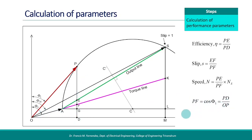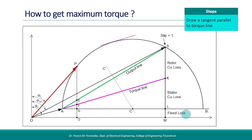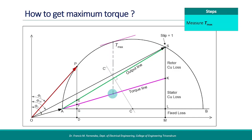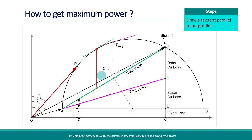Next, we shall see the procedure to find the maximum torque of the machine. Draw a tangent to the circle which is parallel to the torque line, then draw a vertical line from the point where the tangent touches the circle to the torque line. The length of this line represents the maximum torque in synchronous watts, using the selected power scale for conversion. To find maximum power output, draw a tangent to the circle parallel to the power line, then draw a vertical line up to the power line. The length of this line represents the maximum per-phase power output in watts.